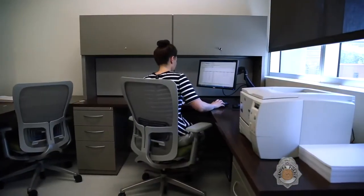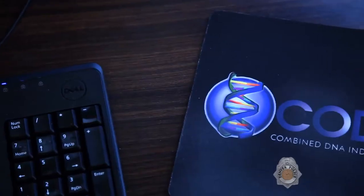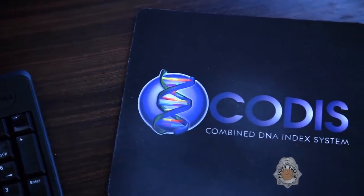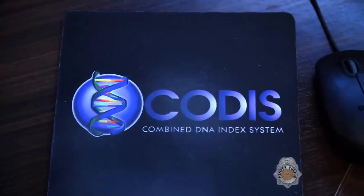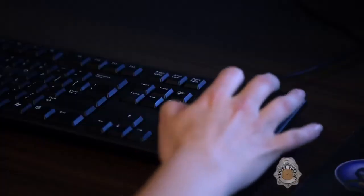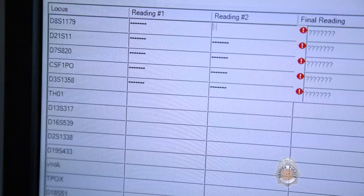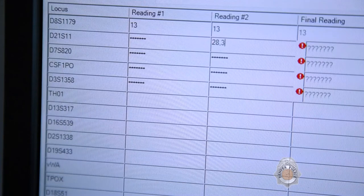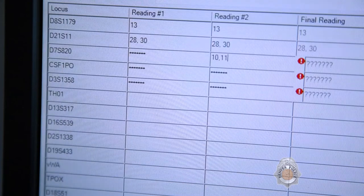DNA cases that are submitted without a known suspect can be searched in the Combined DNA Index System or CODIS database. This is the largest DNA catalog in the world with over 14 million profiles. CODIS is used by law enforcement agencies in the United States to help solve unsolved cases.